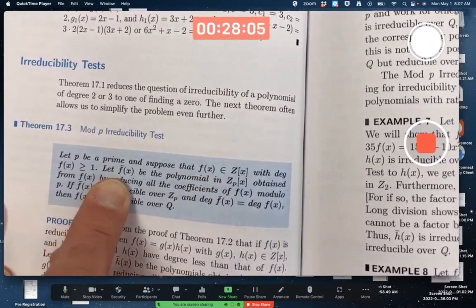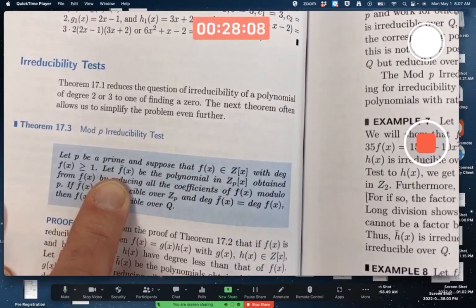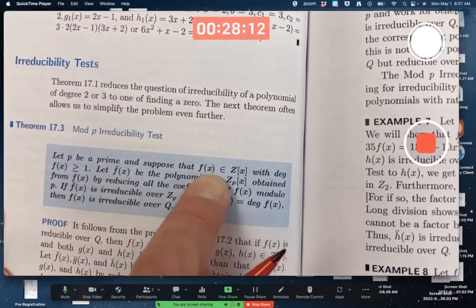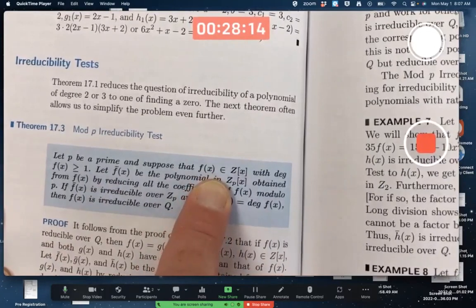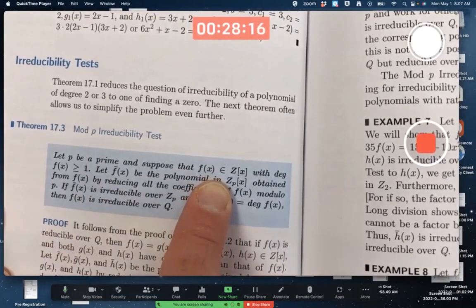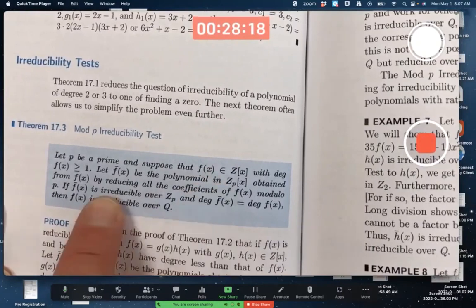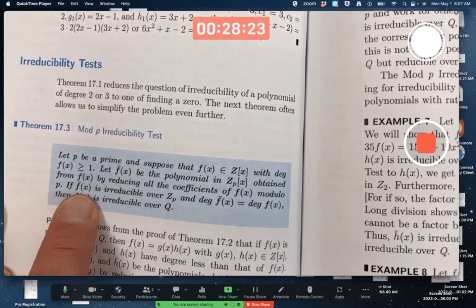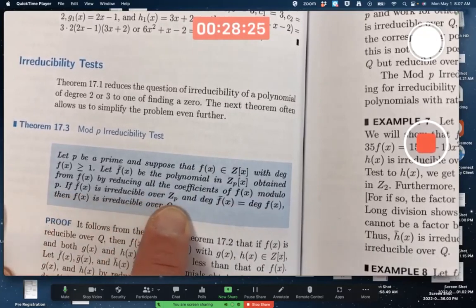You create a new polynomial called f bar of x in Z_p[x] based on the original polynomial by modding all its coefficients by p, where p is some prime, reducing all the coefficients of f(x) modulo p. If it turns out that this f bar of x is irreducible over Z_p,